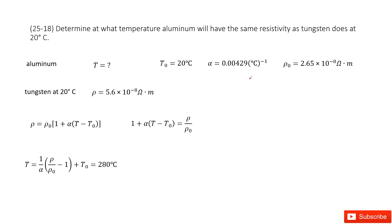Chapter 25 is about electric currents and resistance. You can see we have the first material is aluminum. We need to find the temperature where the resistance equals tungsten at 20 degrees.